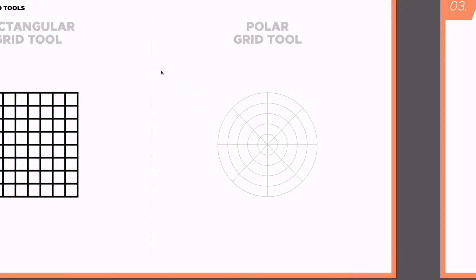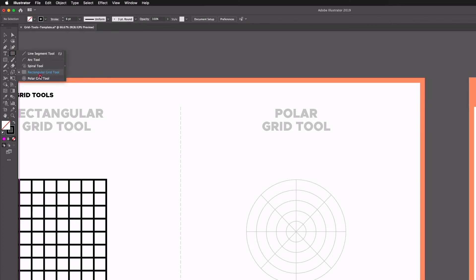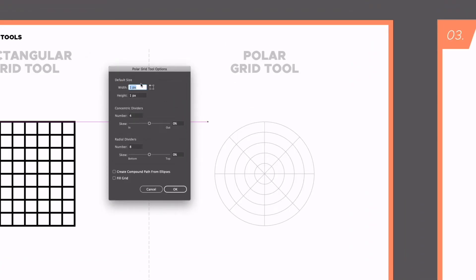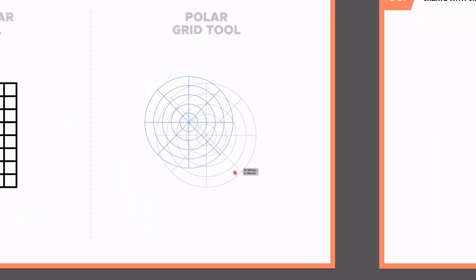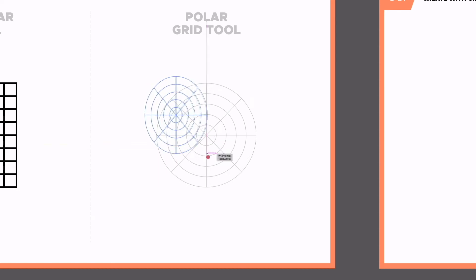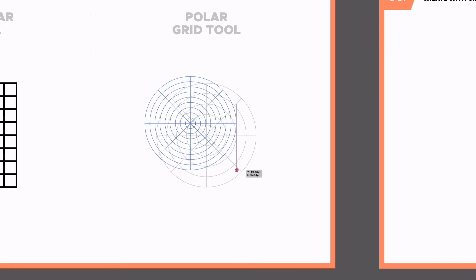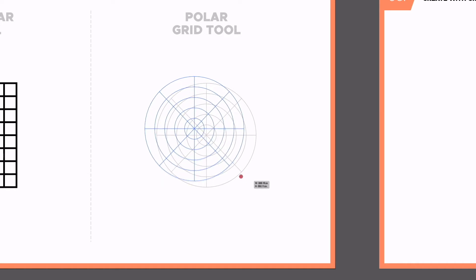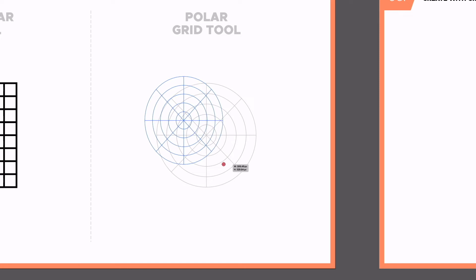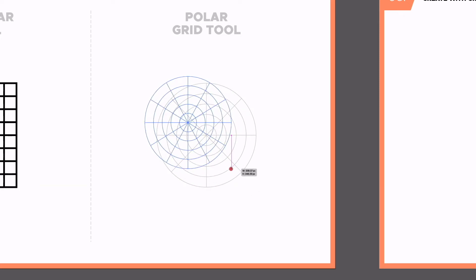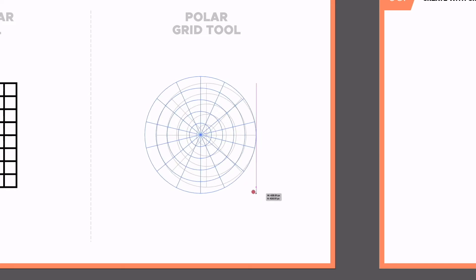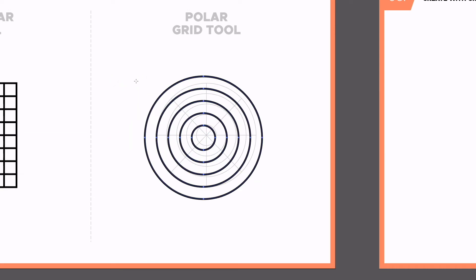Over on the right hand side we have the polar grid tool, which does the same kind of thing but for a more circular grid. Clicking once gives the same dialog box where you can set width, height, concentric dividers, and radial dividers. If I click and drag to draw a polar grid and use my up and down arrow keys, I can add more concentric dividers — adding more circles with perfectly consistent spacing. Using the left and right arrows adds radial dividers, which are straight lines cutting through the circles. You can remove them down to nothing if you just want the circles.